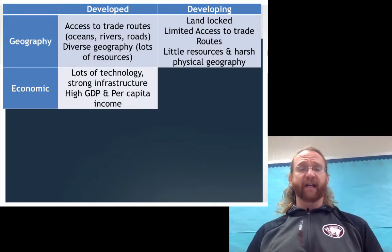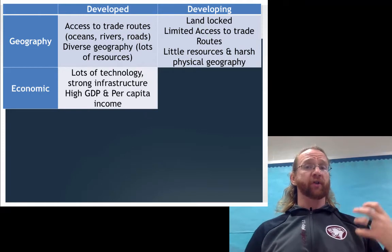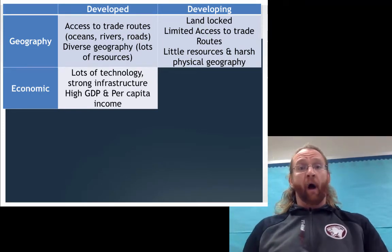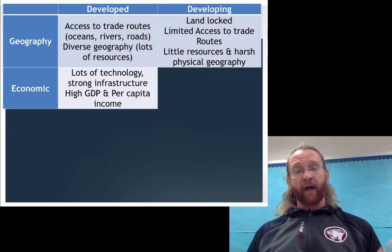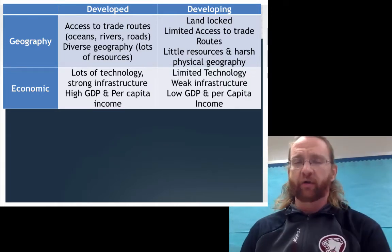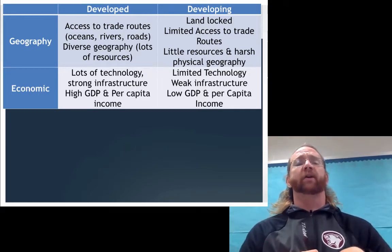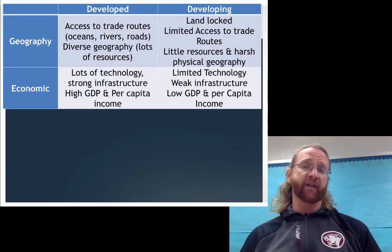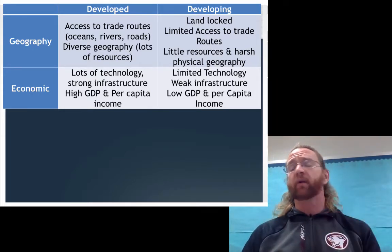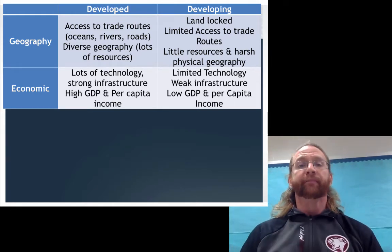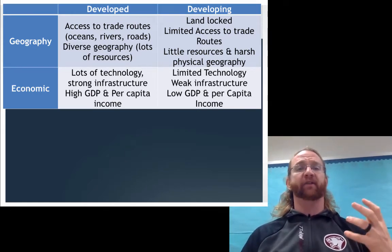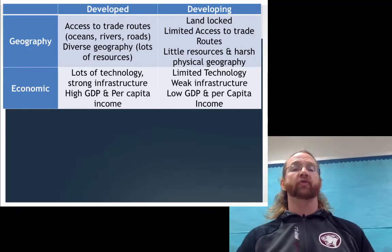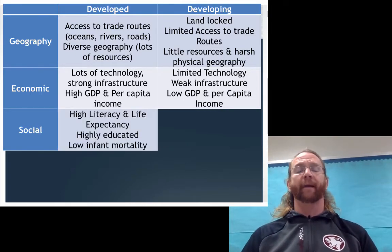Economically, developed countries have lots of technology, lots of well-developed infrastructure — that means roads, communication systems, internet access. They also have a high gross domestic product and per capita income. Gross domestic product, by the way, is the total value of all goods and services produced in a country in a year. Developing countries have very limited or unequal access to technology, extremely weak infrastructure, meaning difficulty communicating and traveling across the country, and low gross domestic product and low per capita income.